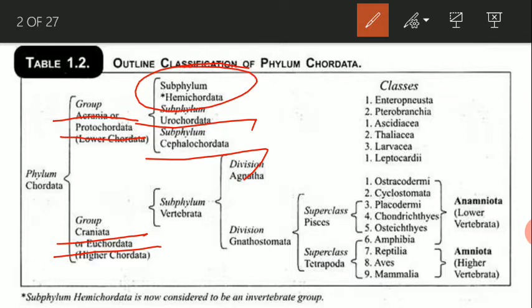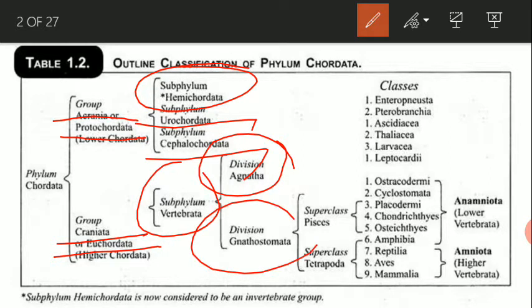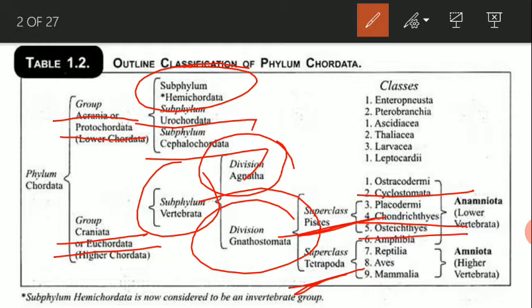Hemichordata is considered as an invertebrate group. Euchordata is divided into subphylum Vertebrata, which is again divided into division Agnatha and Gnathostomata. Under Agnatha, the class is Cyclostomata. Under Gnathostomata, the superclasses are Pisces and Tetrapoda. Under Pisces there are classes Chondrichthyes and Osteichthyes, and under Tetrapoda there are Amphibia, Reptilia, Aves, and Mammalia.